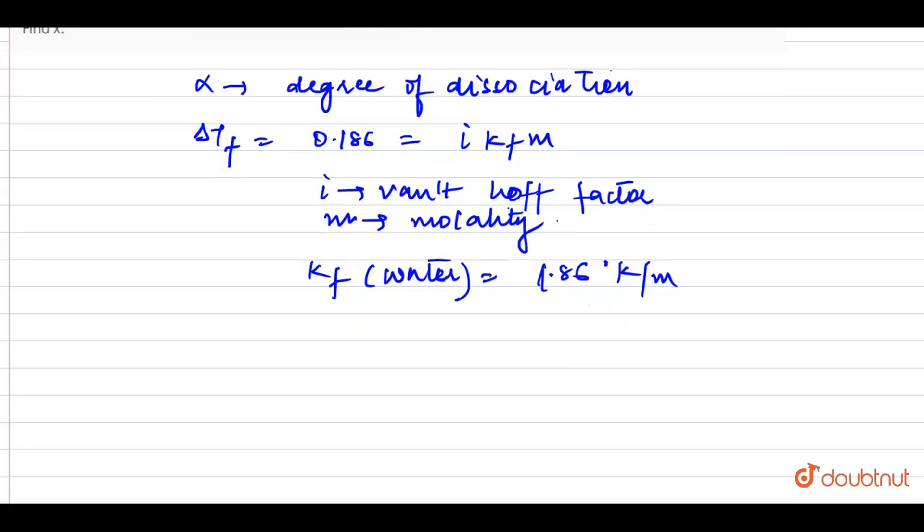Now, if I put all these values in this equation, 0.186 is equal to i into m into 1.86, which gives me m into i is equal to 1 by 10. I will label this equation number 1.